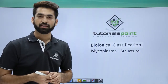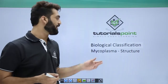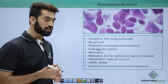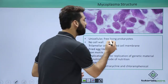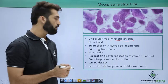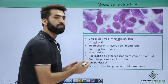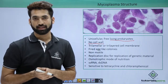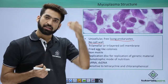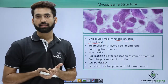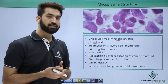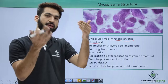This session deals with the description of mycoplasma structure. They are Kingdom Monera members and prokaryotes — free-living prokaryotes. They don't have a cell wall, meaning peptidoglycan is not present. Without a cell wall, they are wall-less bacteria, making them smaller than bacteria, which have an additional external cell wall layer.